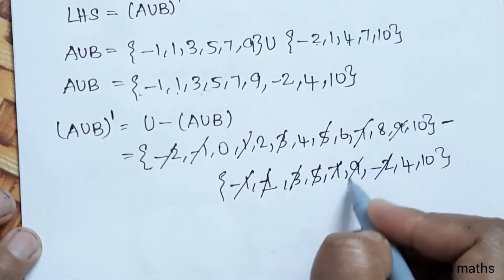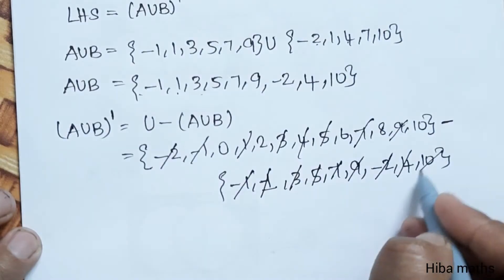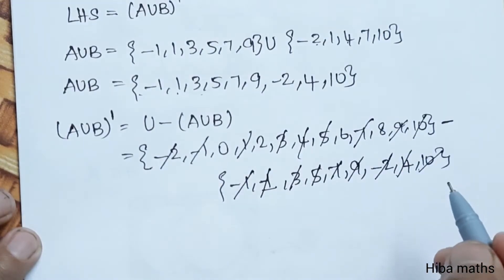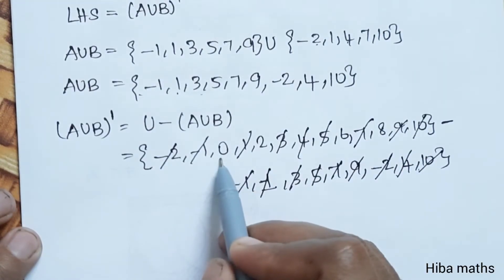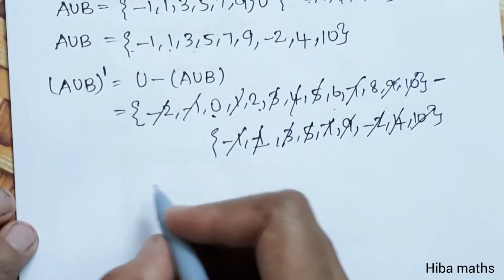After cancellation, the remaining elements are -2, 4, and 10. The balance gives us 0, 2, 6, 8. So (A union B) whole dash = {0, 2, 6, 8}.